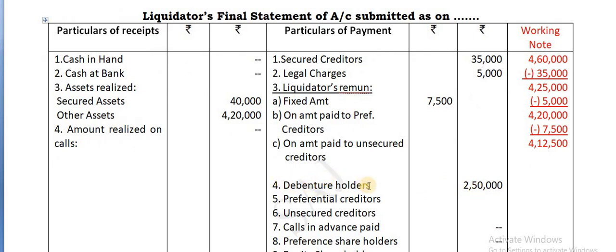Next, the order is the debenture holders. Previous 2 problems, debenture holders amount we had not taken because it was not given. But now there are debenture holders, so first you pay to the debenture holders.